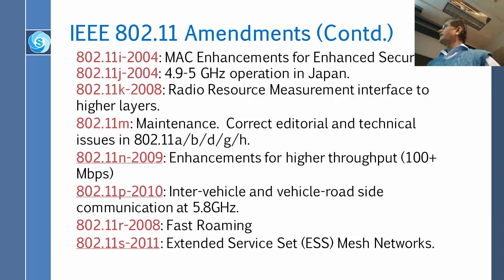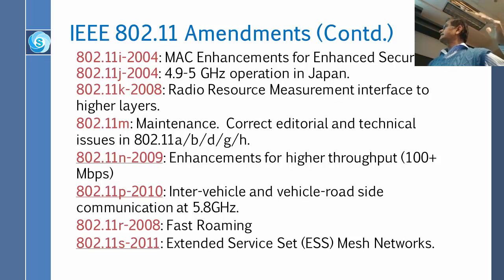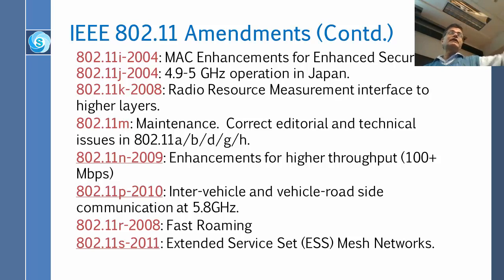Roaming means going from one place to another — in cell phones you do roaming, and the same thing you can do in Wi-Fi. S is extended service set mesh network, so how your packet can go from here to there by stations — that is a mesh network.